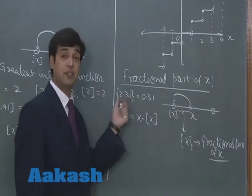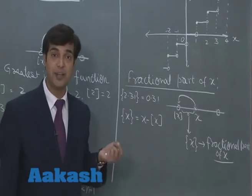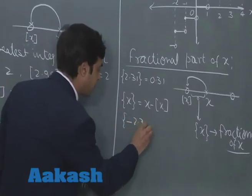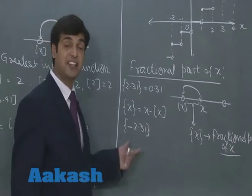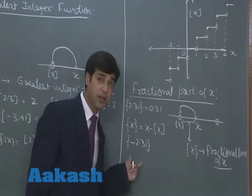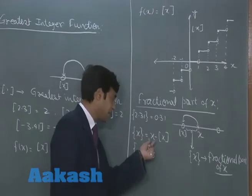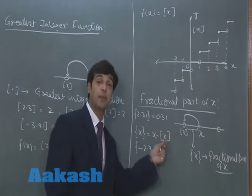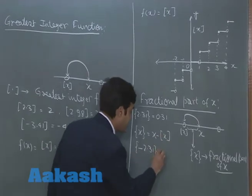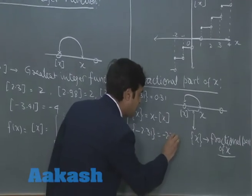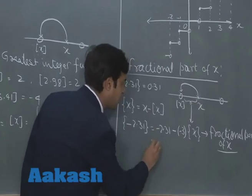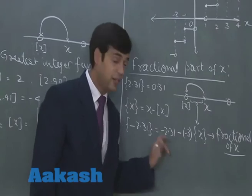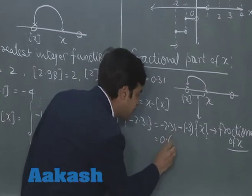So for 2.31: 2.31 minus 2 gives 0.31. If the term is fractional part of minus 2.31, please don't make the mistake of saying it is minus 0.31. It is not minus 0.31. It will be x, meaning minus 2.31, minus the greatest integer of x, which is minus 3. So it is minus 2.31 minus (minus 3), which equals 0.69.